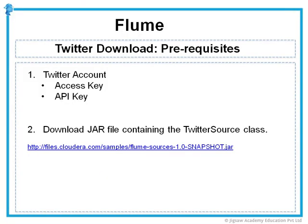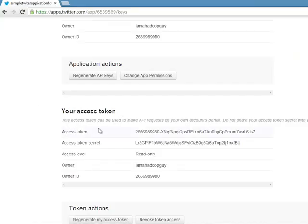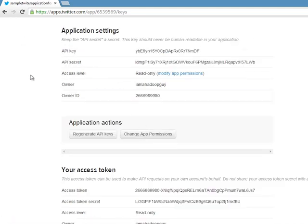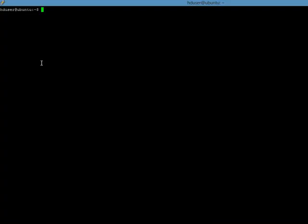Next, we need to download a jar file which has a class called Twitter source. This is going to be our source which will pull the tweets from Twitter's streaming API. You can download this jar file from the link provided, and then use WinSCP to copy that jar file into the flume/lib directory. You now have your access token created. You will need all this information when creating the configuration file, so now we have completed the prerequisites. Let us get down to configuring our Twitter agent.